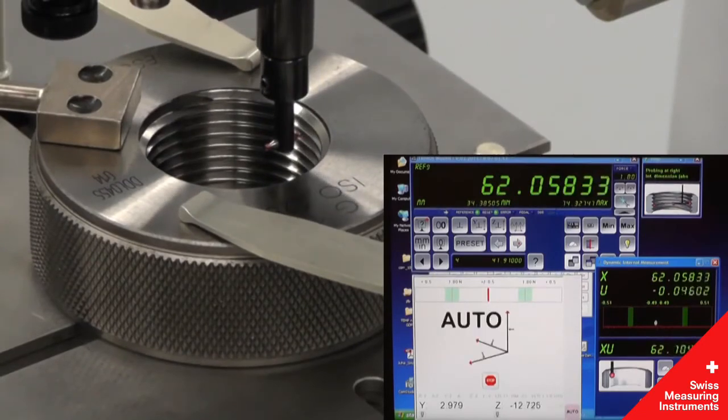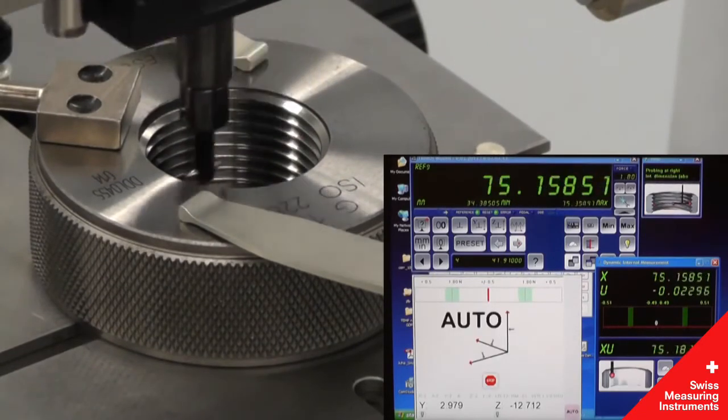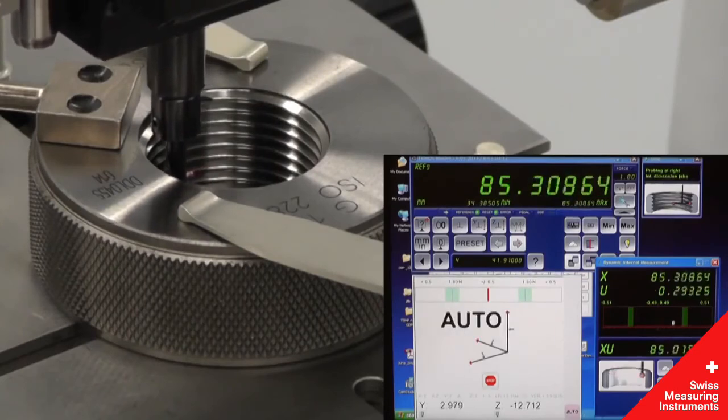To complete the measurement, this action is then performed on the opposing ring wall. This three-point method can be used on straight or tapered thread rings.